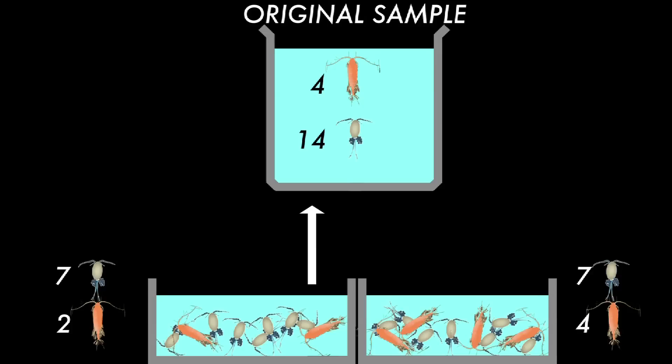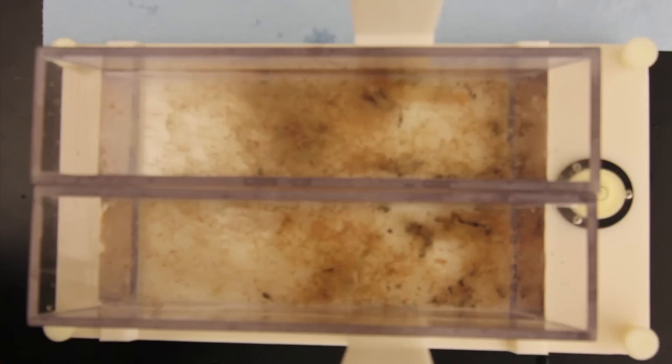Obviously, this can introduce some errors. However, when done carefully, you should be able to obtain aliquots that contain similar proportions of each of the groups of organisms present in your sample.